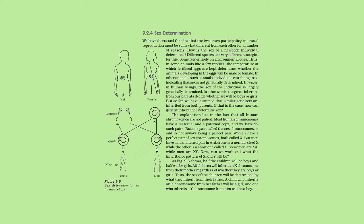Can we work out the inheritance pattern of X and Y? As Figure 9.6 shows, half the children will be boys and half will be girls. All children will inherit an X chromosome from their mother, regardless of whether they are boys or girls. Thus, the sex of the children will be determined by what they inherit from their father. A child who inherits an X chromosome from her father will be a girl, and one who inherits a Y chromosome from him will be a boy.